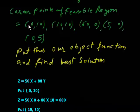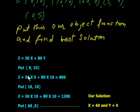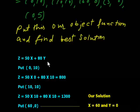Suppose first I am taking this corner point 0, 10 and putting in my objective function which I have to maximize: 50 into 0 plus 80 into 10 equals 800.